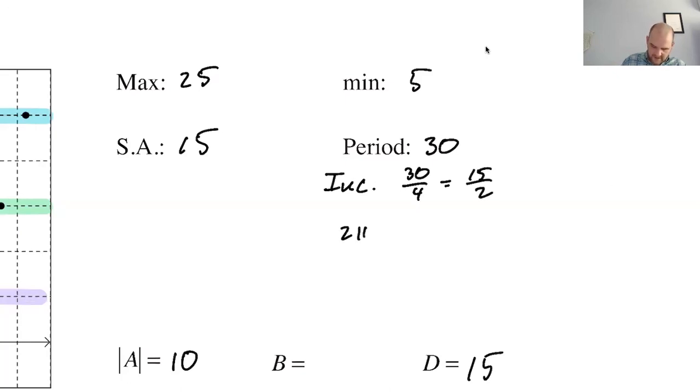And then we also know that 2π divided by B is equal to 30, which means that B is going to be π over 15. So these are all pieces of information that we need.